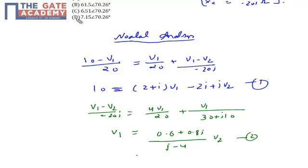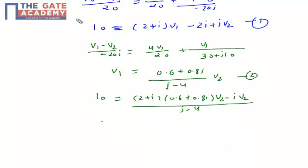Now put the value of v1 in equation number 1. Value of v1 from equation 2 should be put in equation 1. So I get the expression as 10 equals (2 plus j) times (0.6 plus 0.8j) upon (j minus 4) times v2 minus j v2. So I can get the value of v2 as 170 upon 0.6 minus j 26.2.